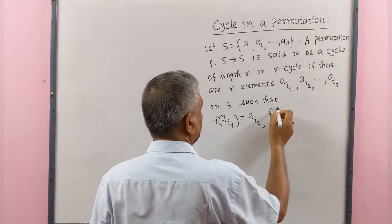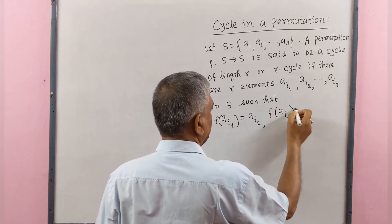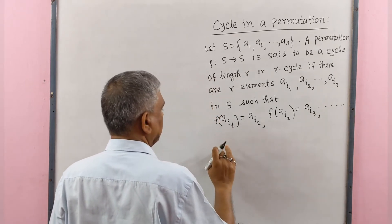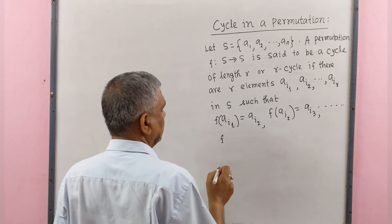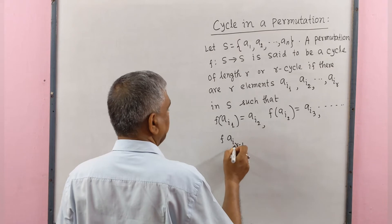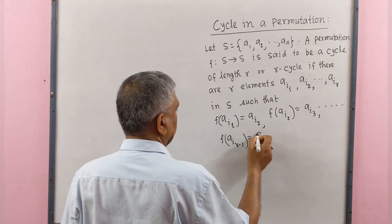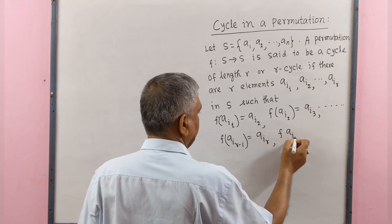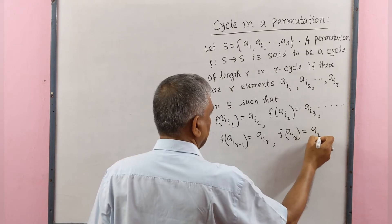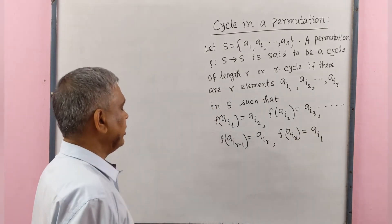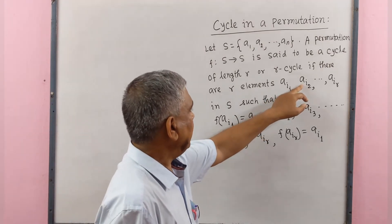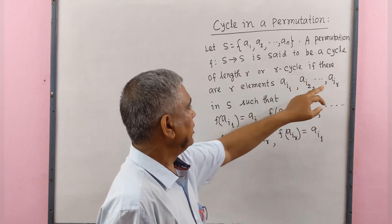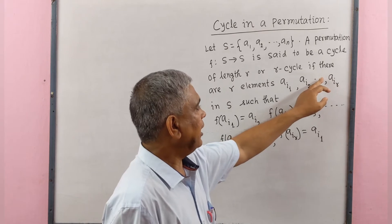F(a_i2) = a_i3, ..., F(a_{i,r-1}) = a_ir, and F(a_ir) = a_i1. Therefore, a_i2 is the image of a_i1, a_i3 is the image of a_i2, a_ir is the image of a_{i,r-1}, and again we return back so that the image of a_ir equals a_i1.